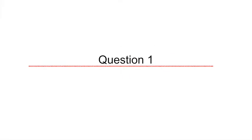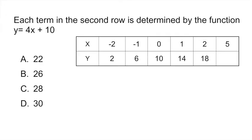Question 1 says, each term in the second row is determined by the function y equals 4x plus 10. They give you this table and when you look at this it actually looks a little bit intimidating if you've never done a problem like this, but it's actually very simple.